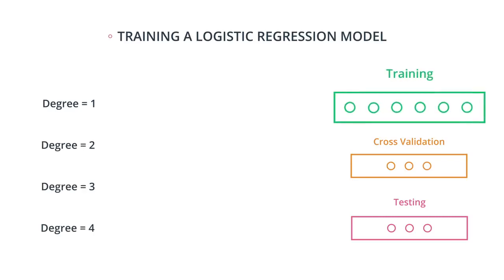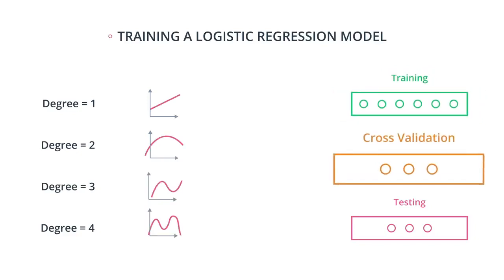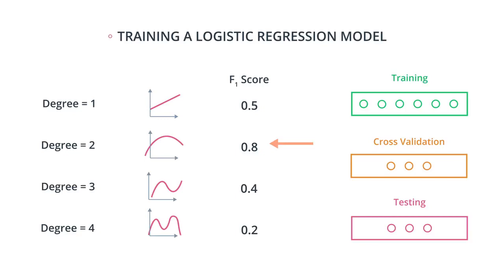We train them with the training data to find the slope and the coefficients of the polynomials. Then we use the cross-validation data to calculate the F1 score of all these models. And then we pick the model with the highest F1 score. As a final step, we use our testing data to make sure our model is good.